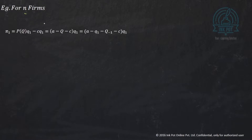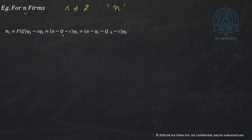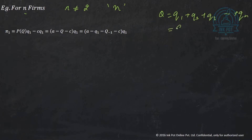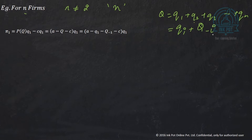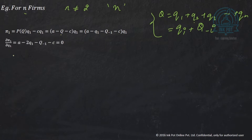In the N-firm Cournot model, we generalize beyond two firms. The total industry quantity Q equals Q1 + Q2 + ... + QN, which we can write as Qi plus Q-minus-i, where Q-minus-i is the quantity produced by all firms except the ith firm. Taking the partial derivative of Pi1 with respect to Q1 and setting it to zero, for firm 1 we get A minus 2Q1 minus Q-minus-1 minus C equals zero.